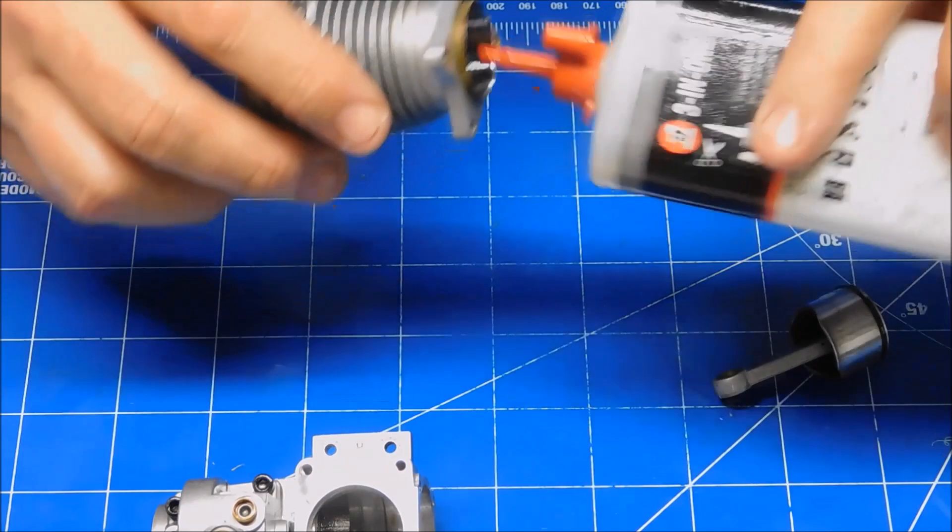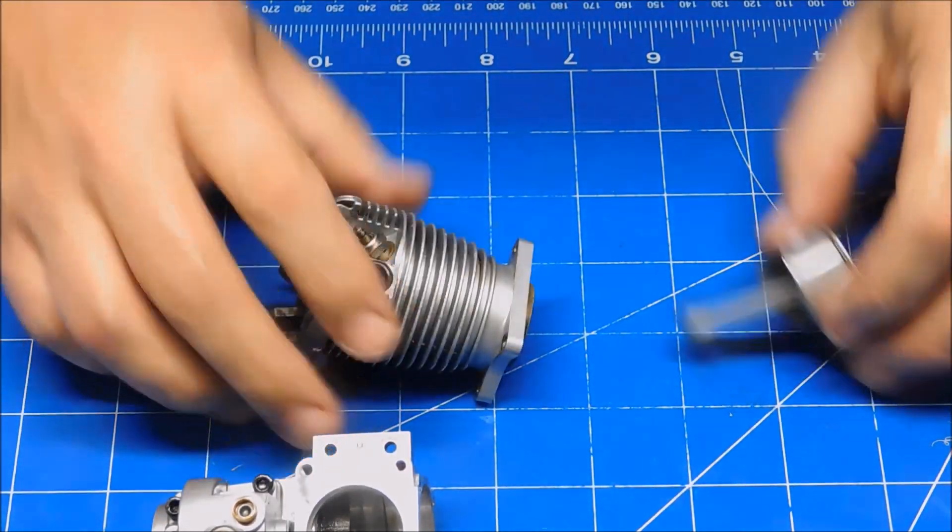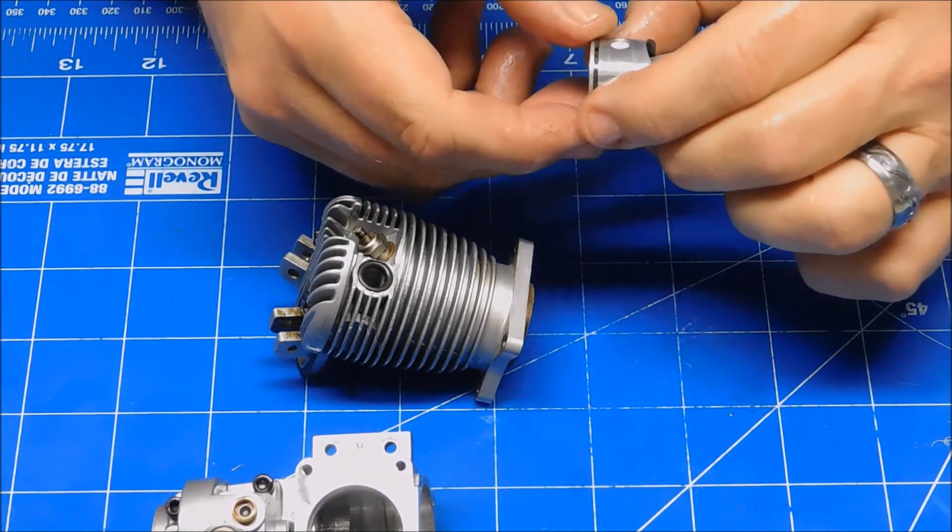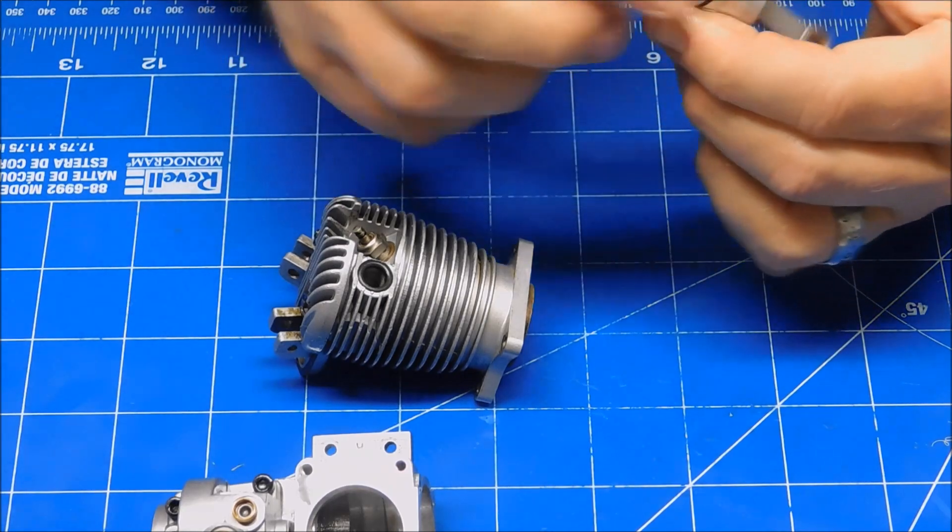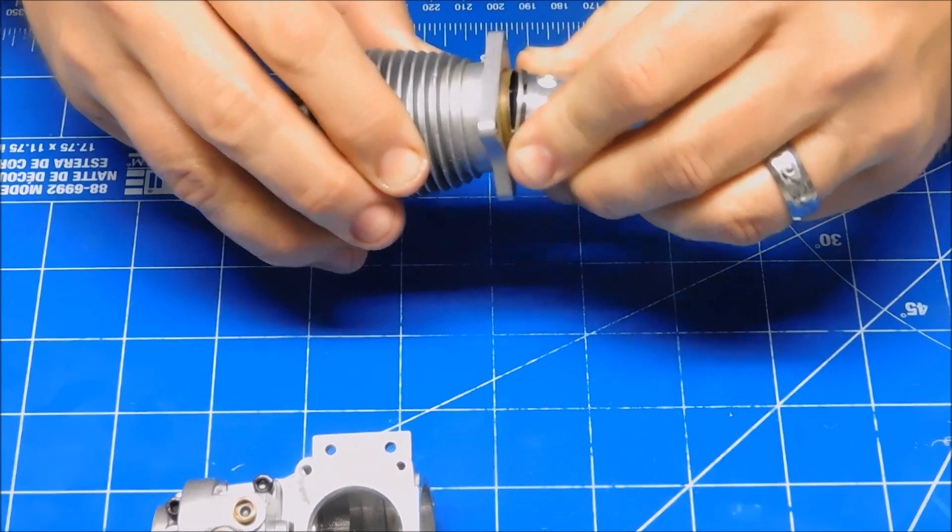So let's put a little oil in our cylinder here. And remembering which way that goes, I'm not really sure, not concerned about which way the ring gap goes because it's going to reseat anyway.